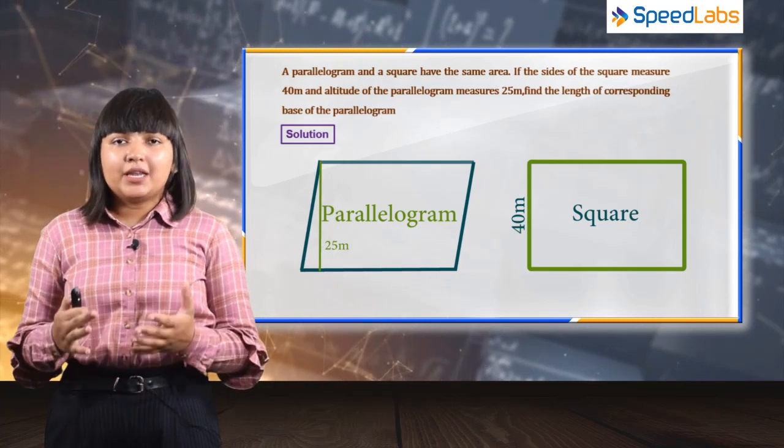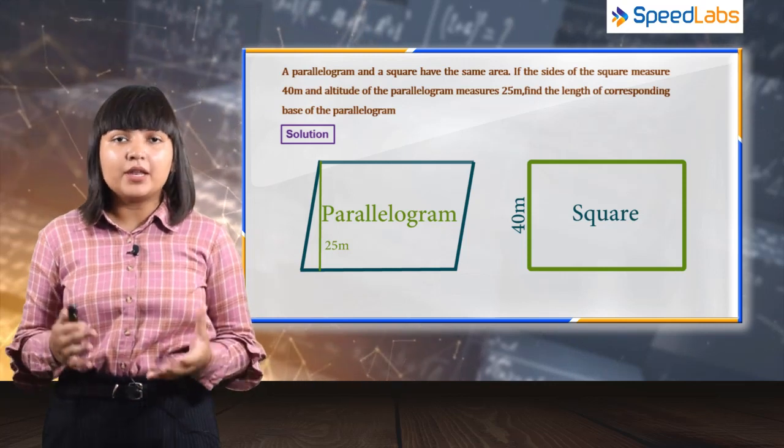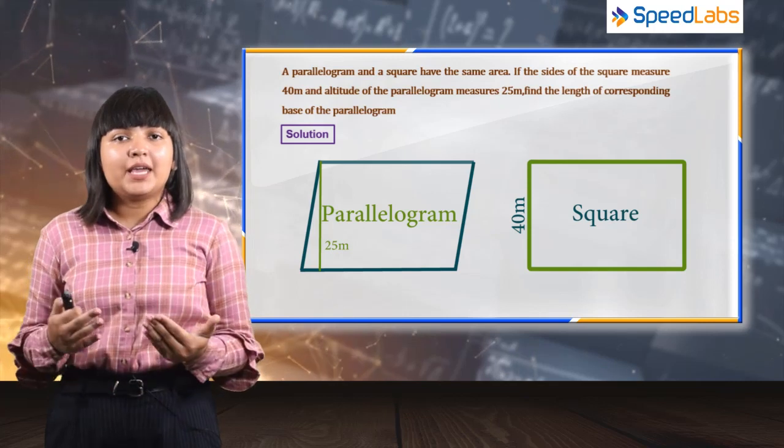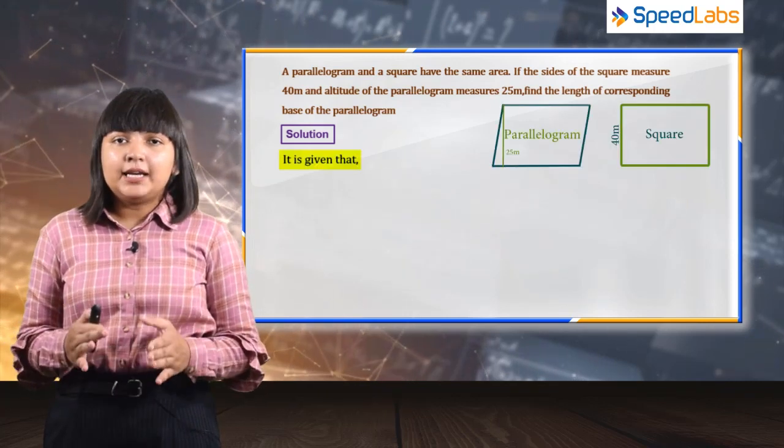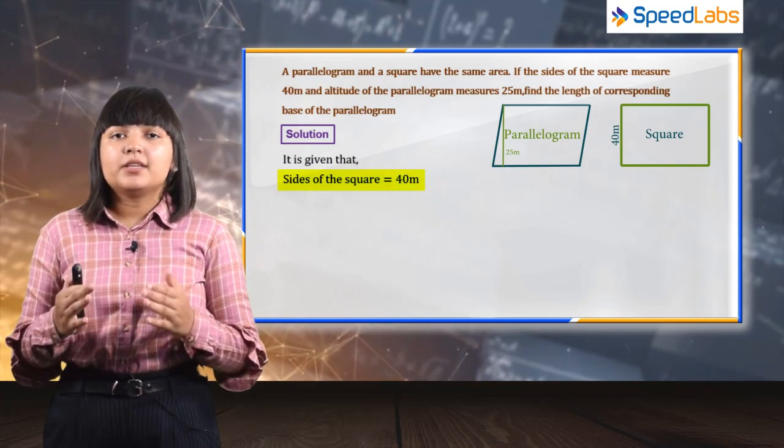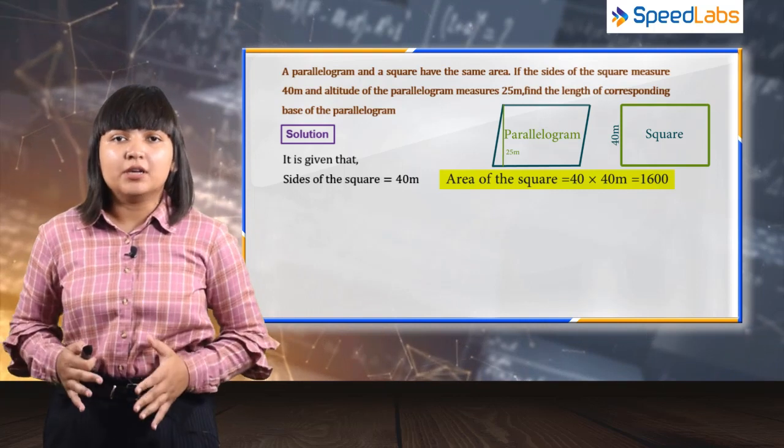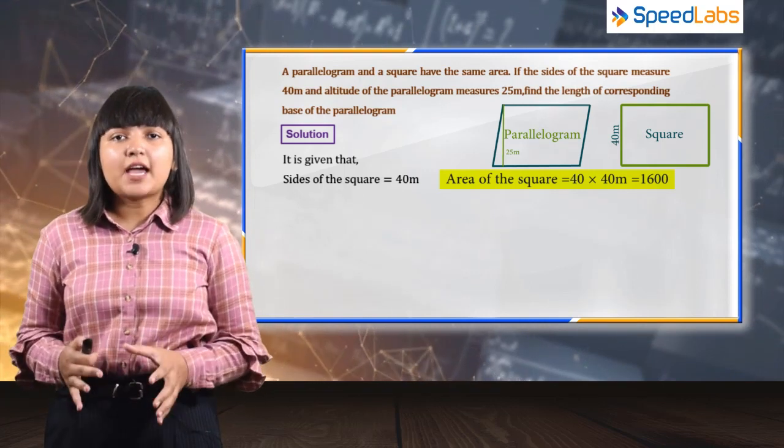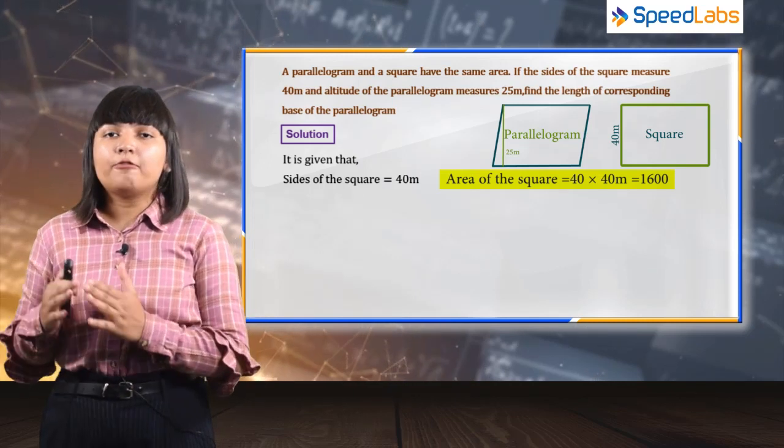If the area is equal, we can say that area of square is equal to area of parallelogram. To find the area of the square, given the side length is 40, the area of square will become 40 into 40, that is 1600 meter square. So we have found the area of square which is equal to the area of the parallelogram.